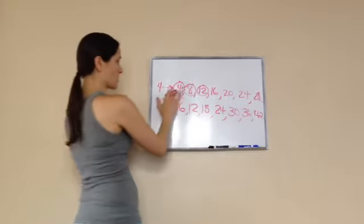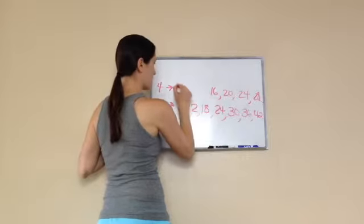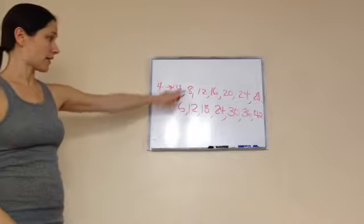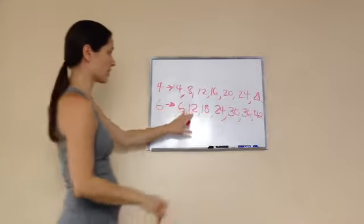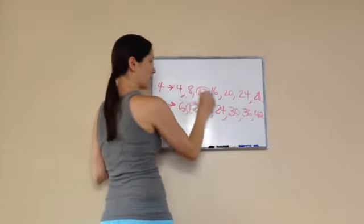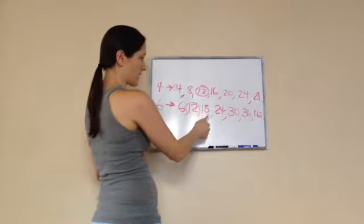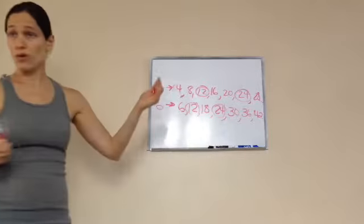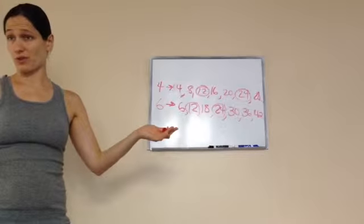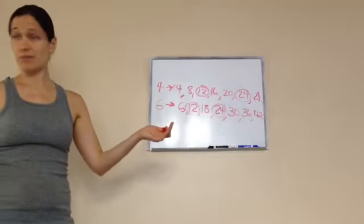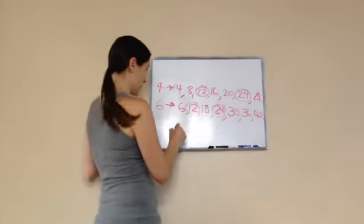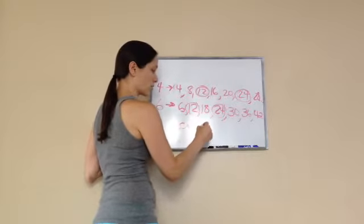Do you see any common 6 in there? Nope. 12 in there? Yep. We can keep asking—18? No. 24? Yes. But we're only needing the least, so really you just have to find the first number that's common. What is the least common multiple for 4 and 6? LCM equals 12.